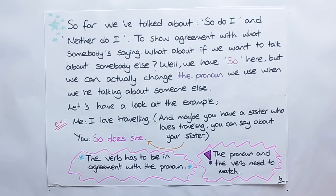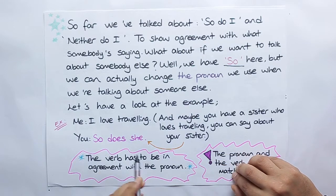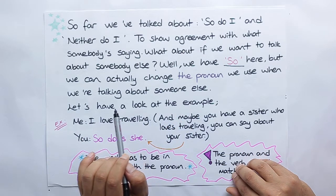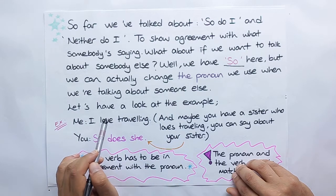So far, we have talked about so do I and neither do I to show agreement with what somebody is saying. What about if you want to talk about somebody else? Well, we have so here. But, we can actually change the pronoun we use when we are talking about someone else. Let's have a look at the example.